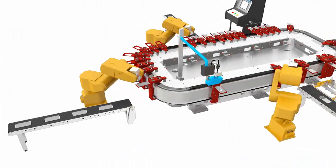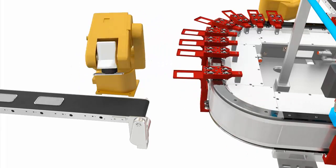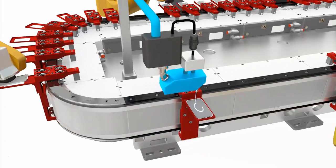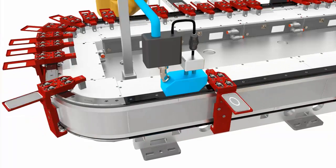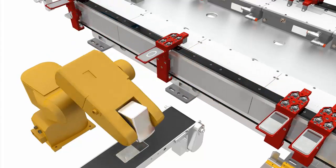This animation shows how iTrack can be used to optimize assembly operations and reduce machine size. The flexibility of the iTrack system allows motion to be controlled in the forward and reverse direction as well as coordinated with other axes.